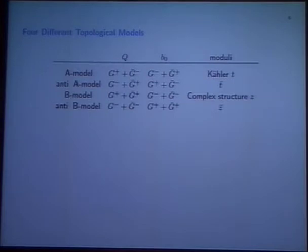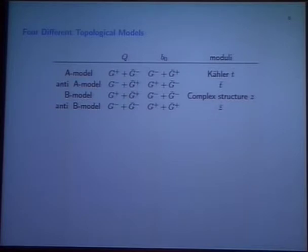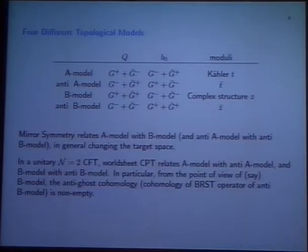To appreciate tadpole cancellation, you have to appreciate that there are four different topological models. These four models differ in how you identify BRST and anti-ghost with the generators of the superconformal algebra. There's the A model, anti-A model, the B model, and the anti-B model. The Kähler moduli are denoted by T and the complex structure moduli by Z. There are symmetries that relate the four models — the most famous one is mirror symmetry that relates A and B model.